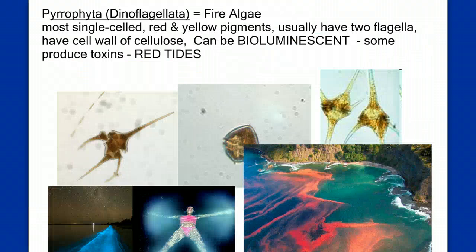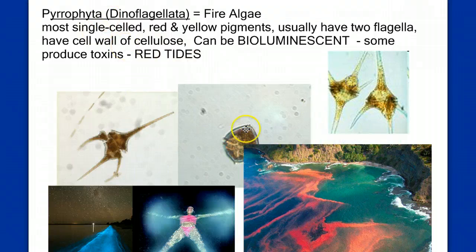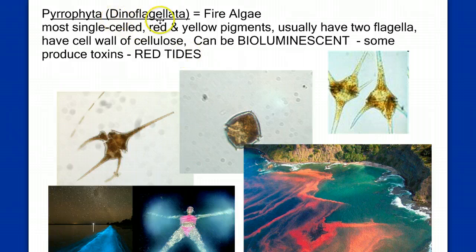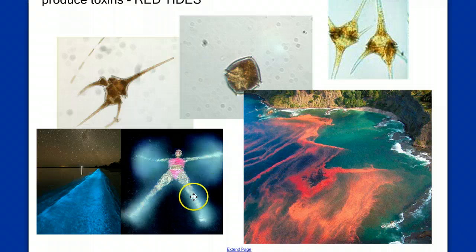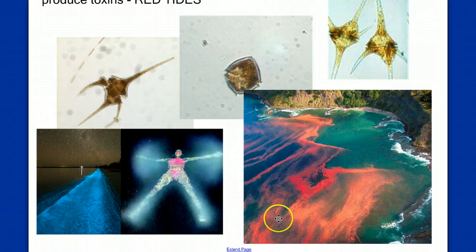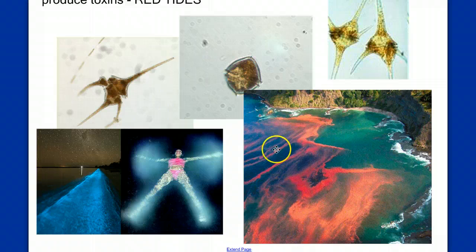Let's move on to the pyrrophyta — the fire algae. 'Pyro' means fire. These are also mostly single-celled, often having two flagella — the dinoflagella. Some species have the ability to give off light or bioluminesce. You can see the light being given off at night. Some other species can produce toxins. Here's a bloom of fire algae — billions upon billions of cells visible from above.